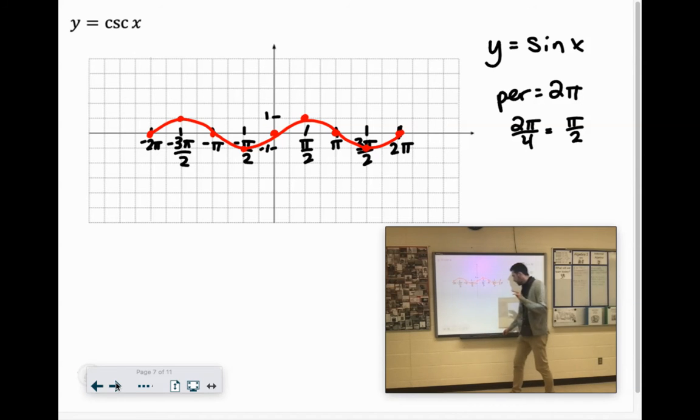So cosecant, again, it's almost fun. It's kind of like combining this with how we had the asymptotes on tangent. So remember the asymptotes were when we had 1 divided by 0 or negative 1 divided by 0 on the unit circle. You can't divide by 0.